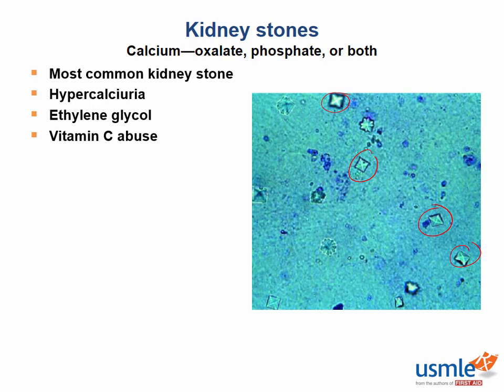There is increased calcium oxalate stone formation in Crohn's disease because patients have fat malabsorption. The fat stays in the small intestine and binds the calcium. Therefore, the calcium cannot bind oxalate, and the oxalate gets absorbed instead. This leads to calcium oxalate precipitation in the urine over time.